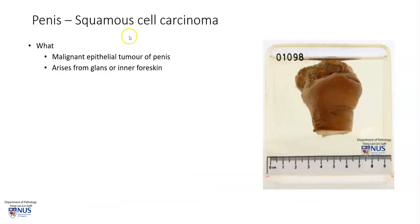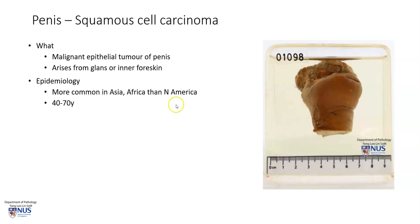Squamous cell carcinoma is a malignant epithelial tumor of the penis, and it arises from the glans itself, as you can see here, or the inner foreskin. This is more common in Asia and Africa compared to North America.